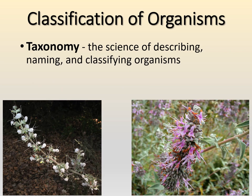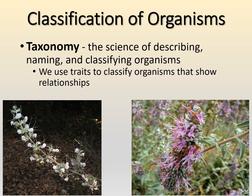Taxonomy is really the science of describing, naming, and classifying organisms. Each level gets more specific as you go down, and more general as you go up. We use traits to classify organisms that show relationships. For example, these two flowering plants — their flowers look somewhat similar, the groupings and colors differ, and the leaves may be similar. You can pick different traits to create your classifications.